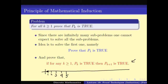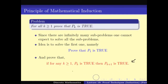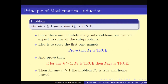Since I know P1 is true, therefore P2 is true. Since I know P2 is true, therefore P3 is true. Since P3 is true, P4 is true, and so on - P5, P6, P7, P8, P9, P10 are all true. This way I will be able to prove that for all n, when n is greater than or equal to 1, Pn is true, and hence proved.